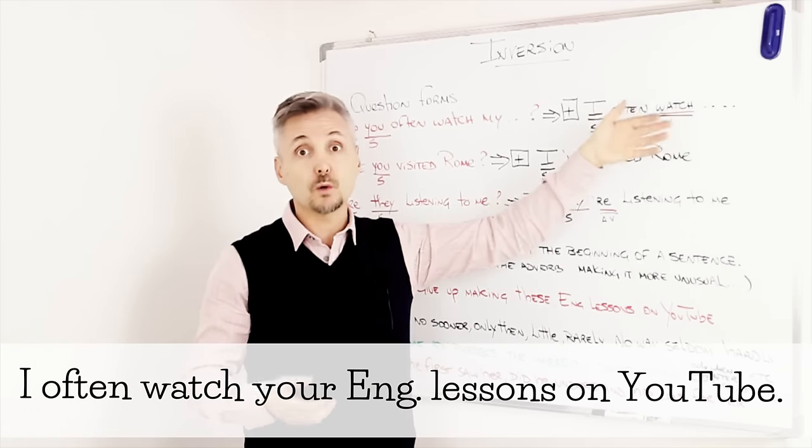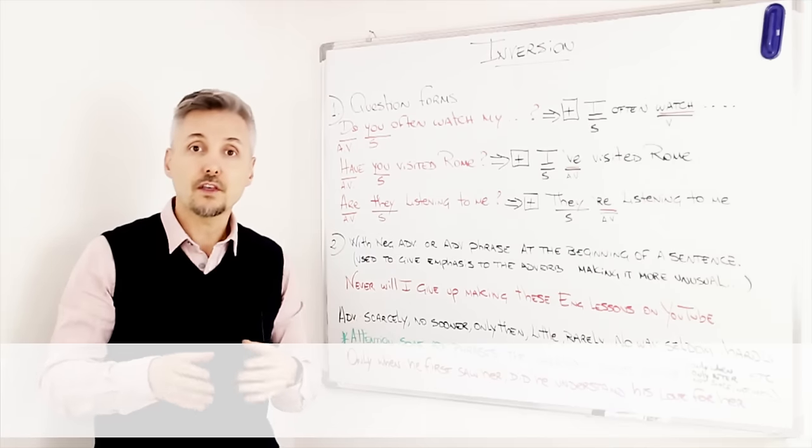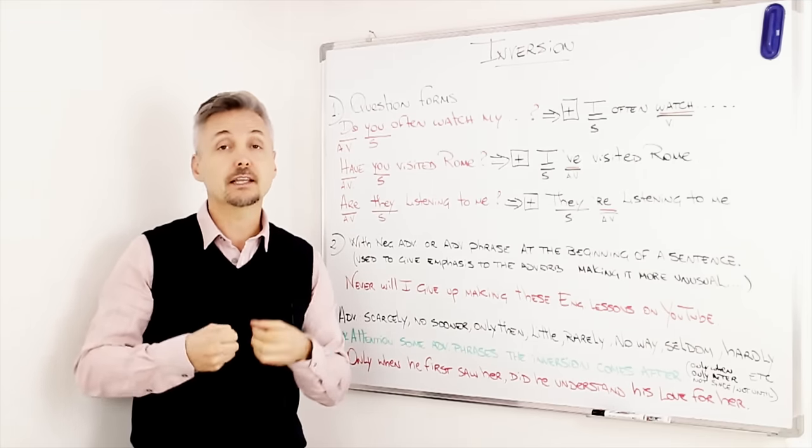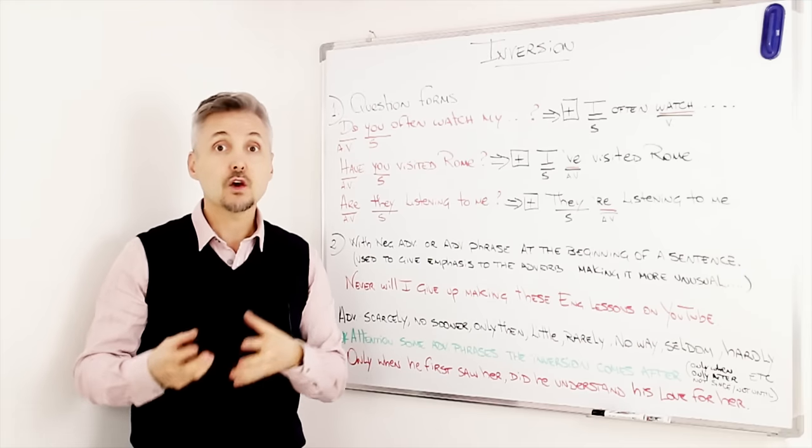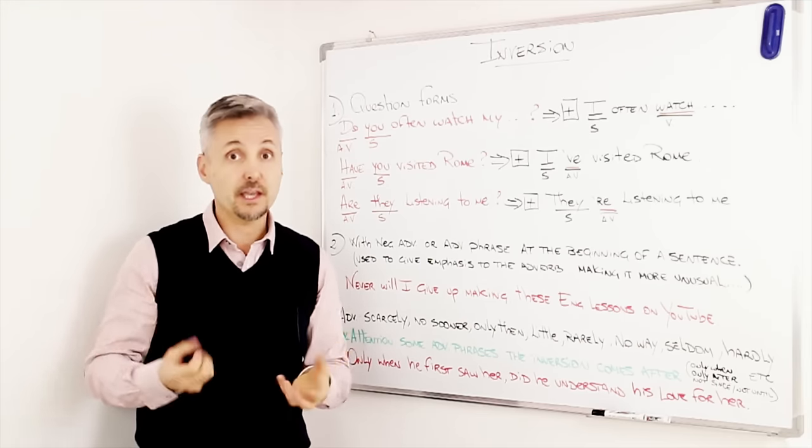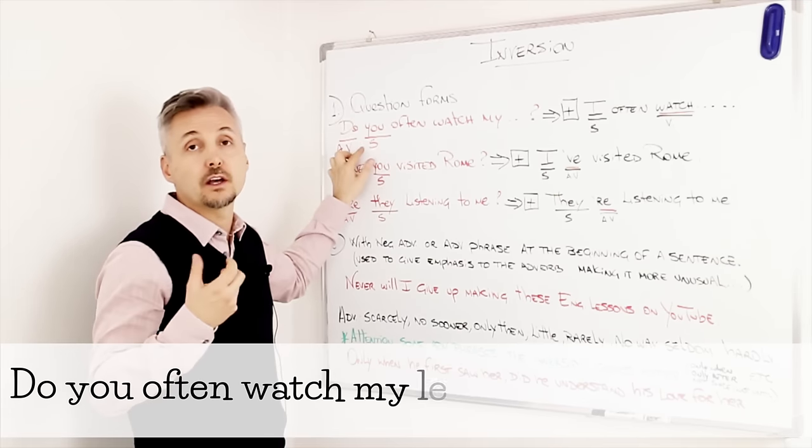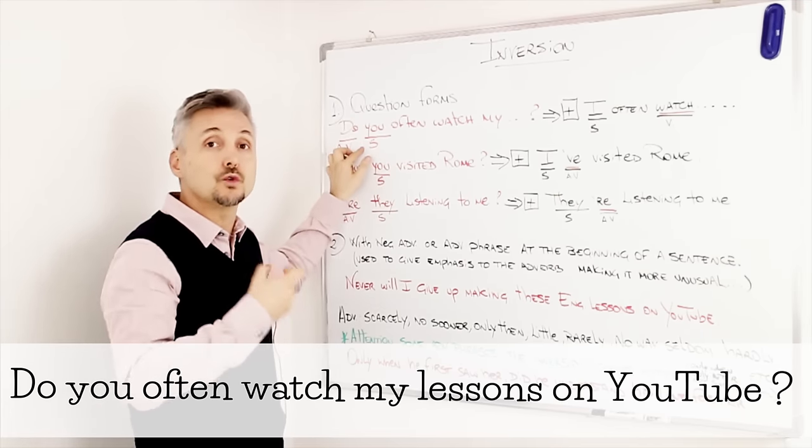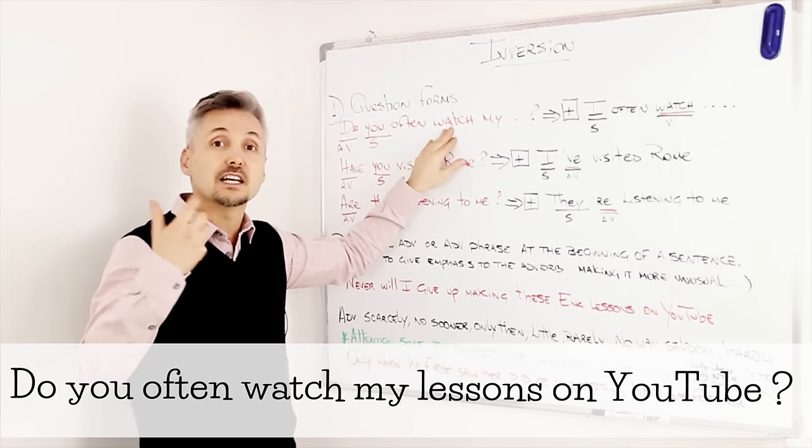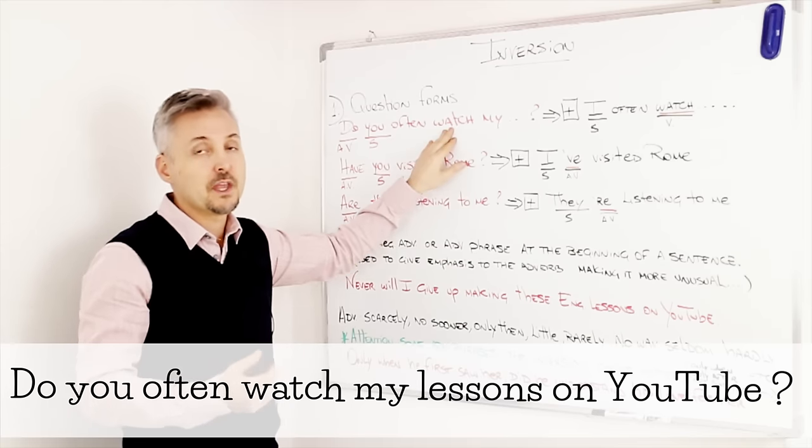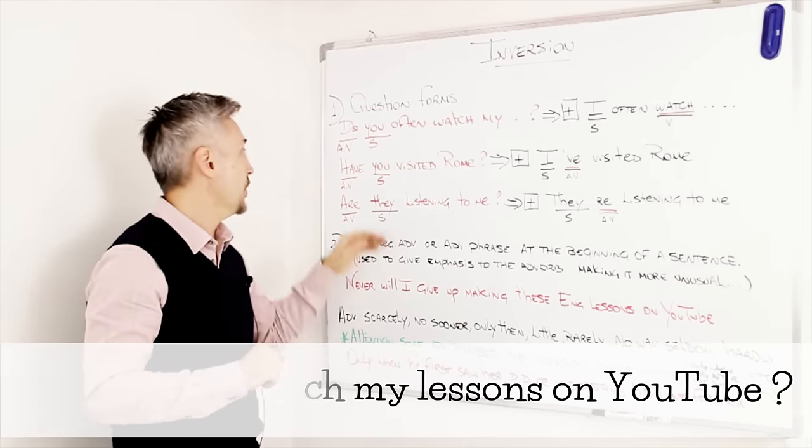And then the verb goes after. Remember that when we make a question in the present simple tense, we need to put an auxiliary before, right? So, do you, and this is where inversion comes. Do you often watch? Does she often watch? Et cetera. Now, I have other examples for you.